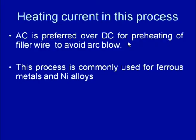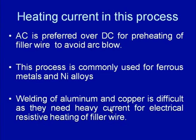AC is preferred over DC for preheating the filler wire to avoid any tendency of arc blow. This process is commonly used for welding of ferrous metals and nickel alloys. Welding of aluminum and copper is found to be difficult by the hot wire GTAW process because it requires a lot of current for heating by the electrical resistance heating principle.